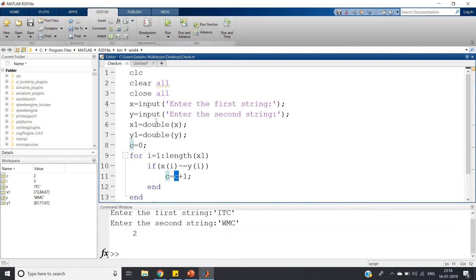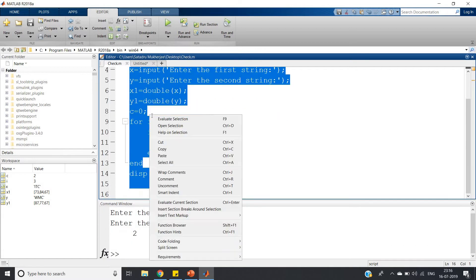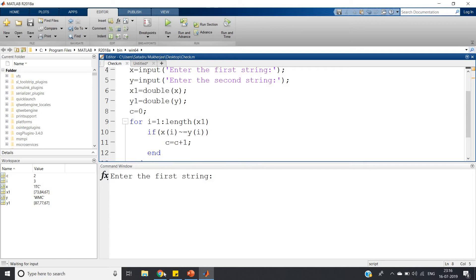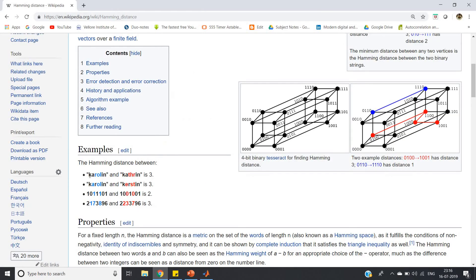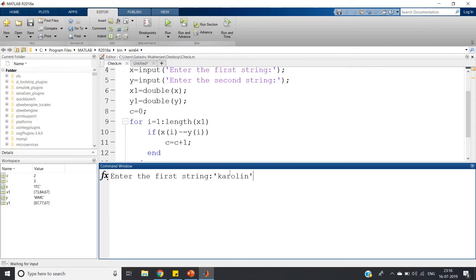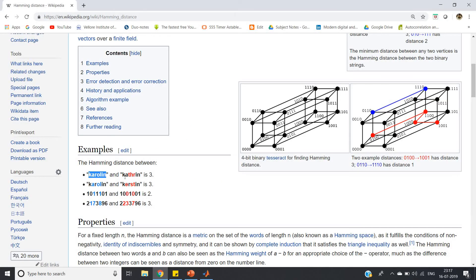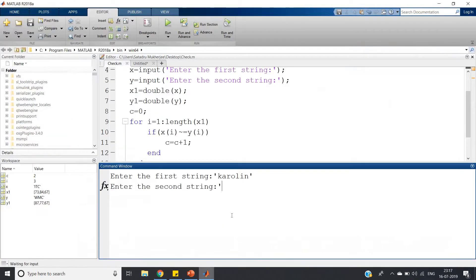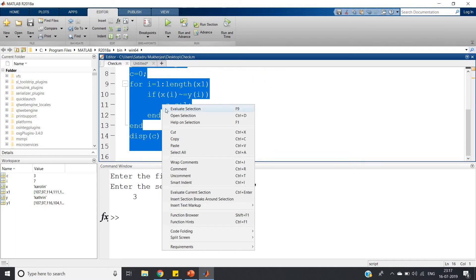Let us check whether our code is working or not. Evaluate selection, enter the string. Let me take this string from Wikipedia itself. As we are giving string input, don't forget to give inside single quotation. Then first one is Caroline and second one is Katherine. Press enter. See what you are getting - the Hamming distance between these two input strings of same length is three.